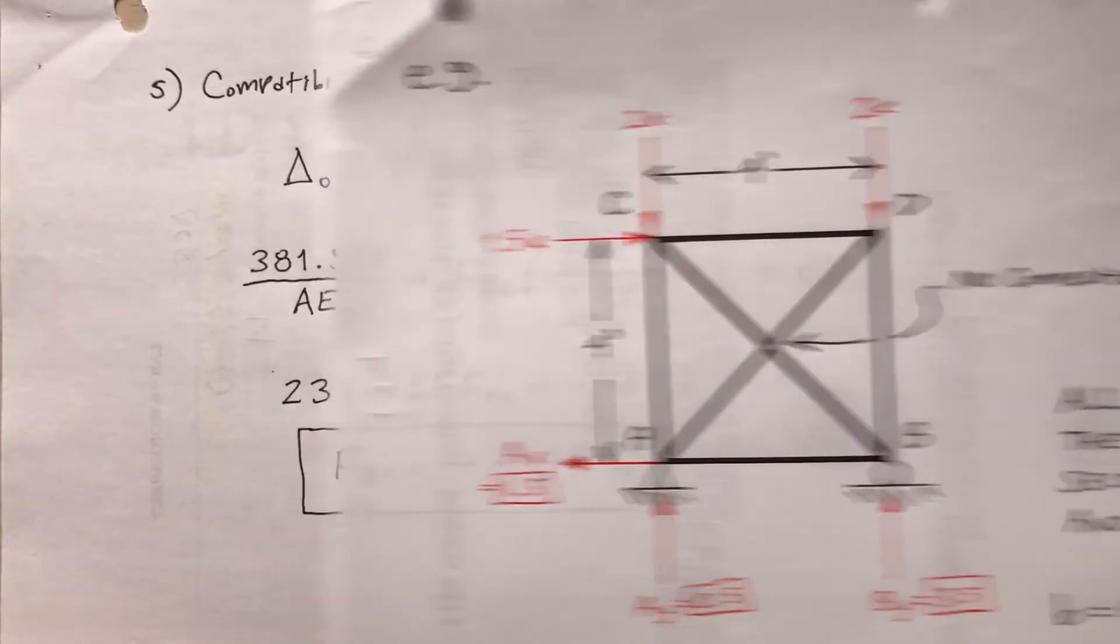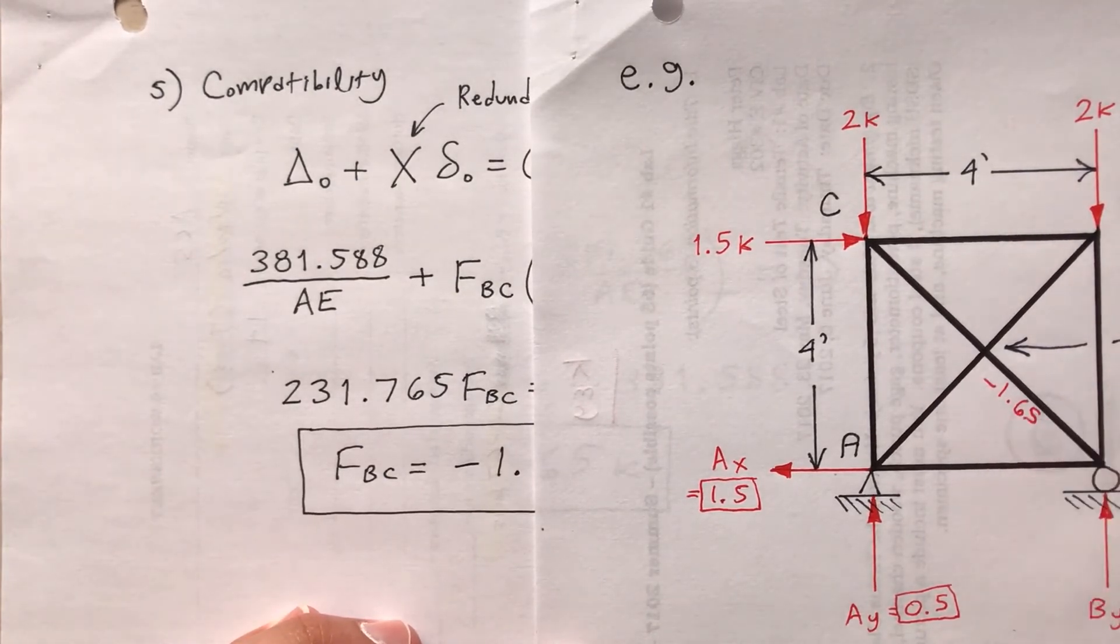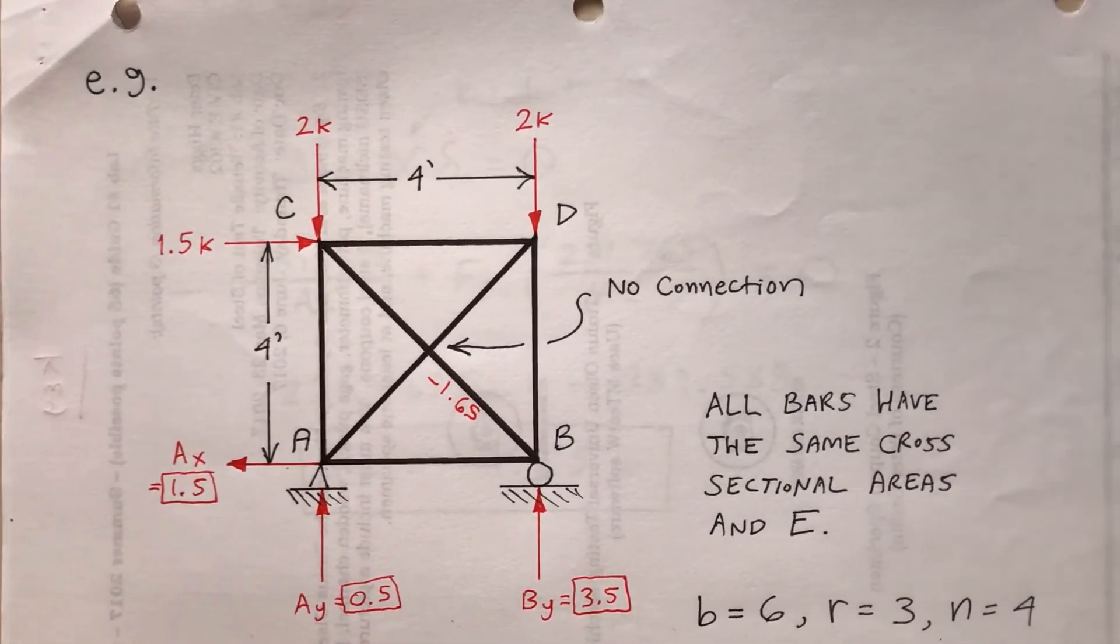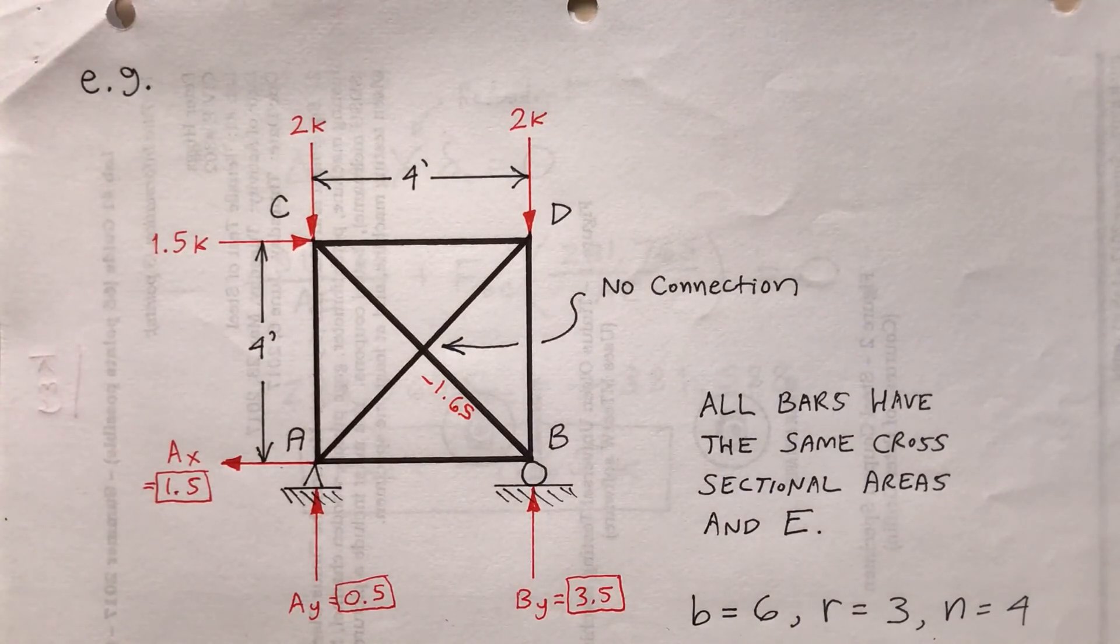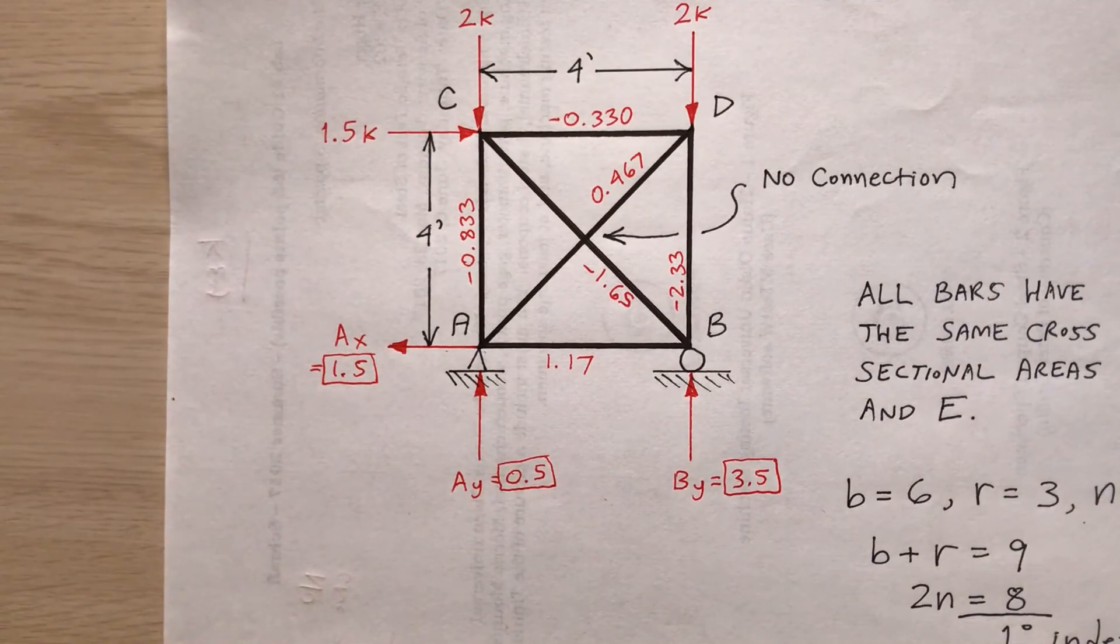So going back to the original drawing. Negative 1.65. 1.65 kips in compression. And now step six would be to use the method of joints or the method of sections to find all the other internal bar forces. So I calculate all the other internal bar forces as you see here. Negative means compression, positive means tension. So there you have it. This was an indeterminate truss, indeterminate internally. So I found all the external reactions and I found all the bar forces. There you have it.